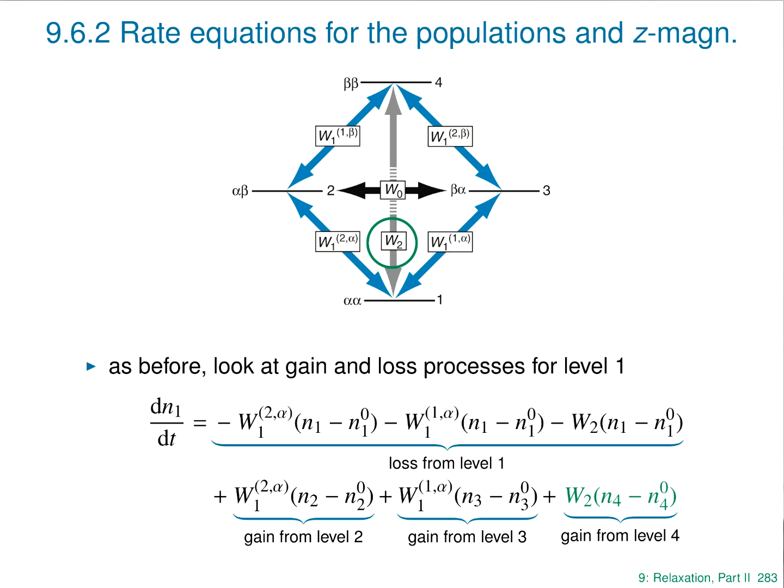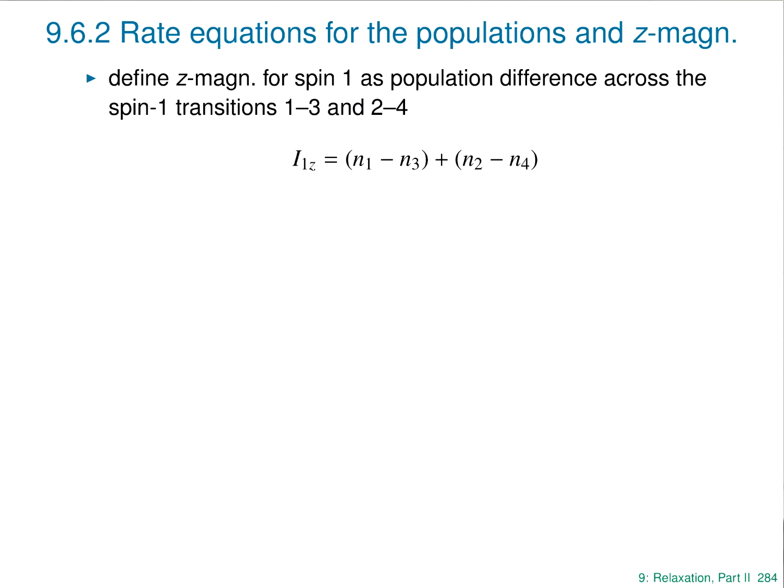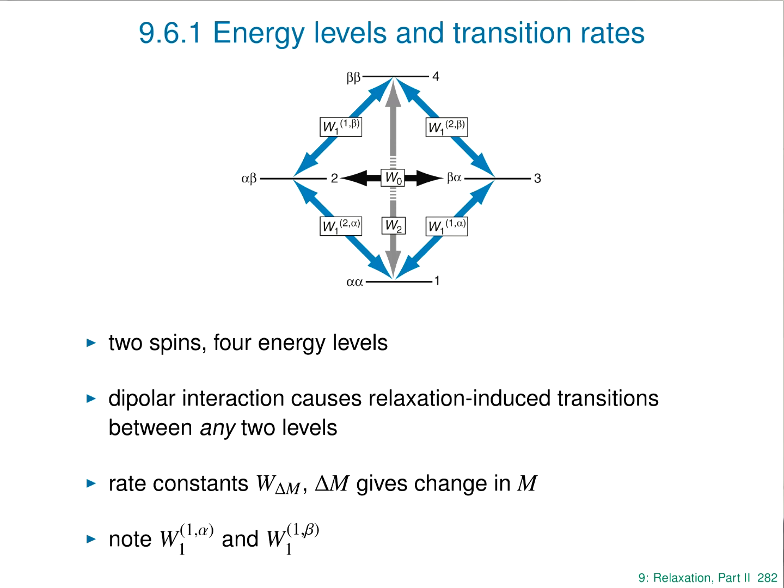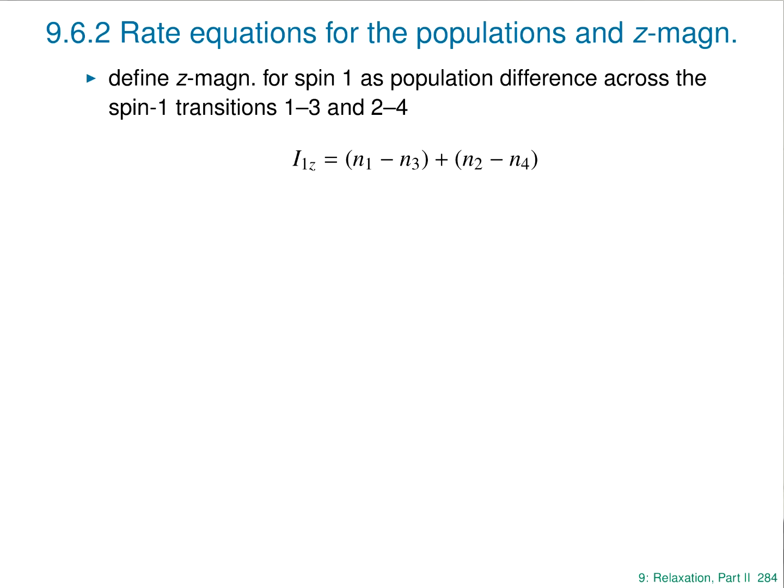We can render these into a simpler form by writing the magnetizations in terms of the populations. The spin-1 Z magnetization I1Z can be written as (N1 − N3) + (N2 − N4), because transitions 1-3 and 2-4 are both spin-1 transitions. So the total magnetization on spin 1 is N1 minus N3, then N2 minus N4.